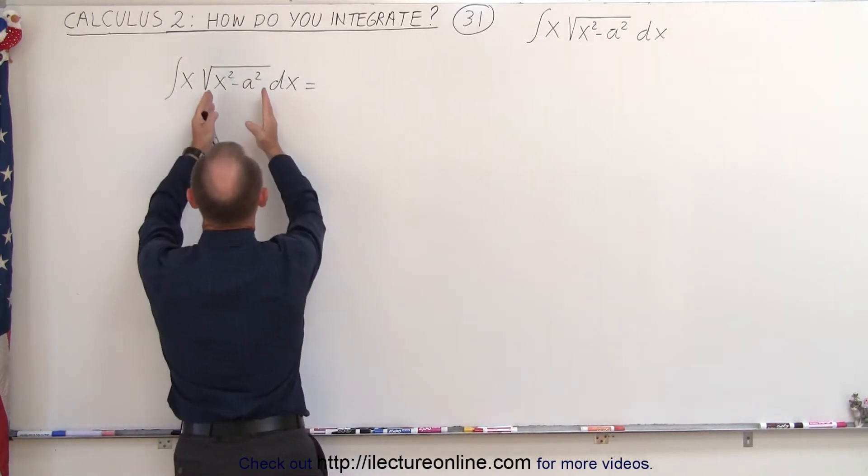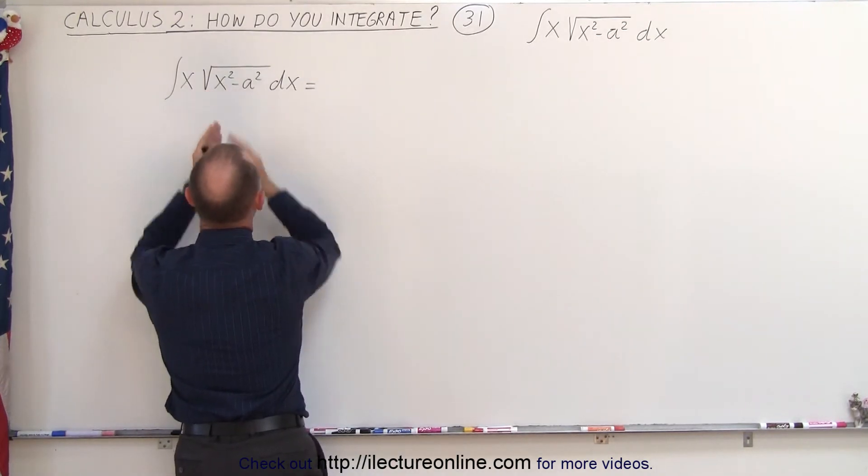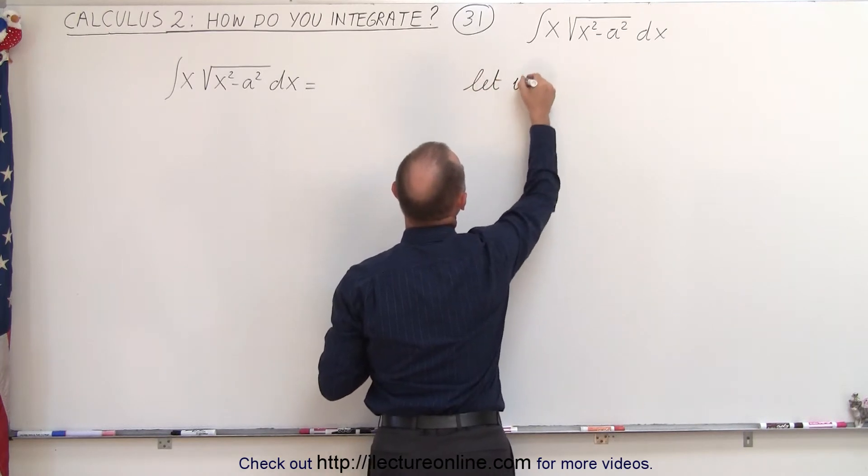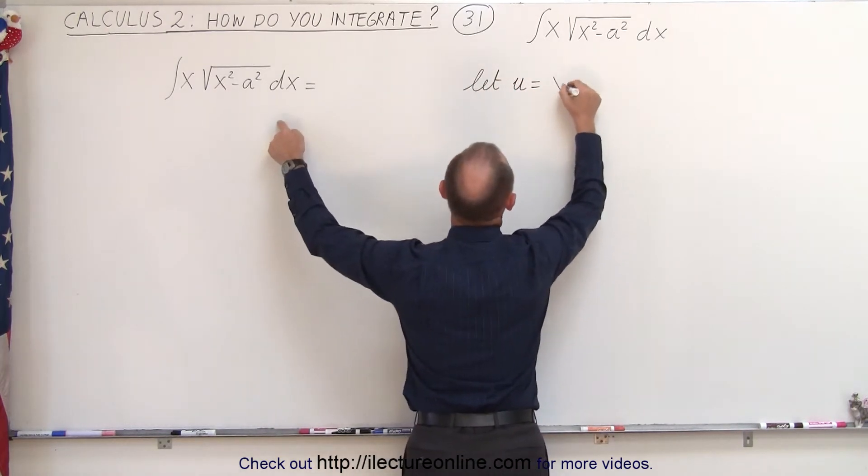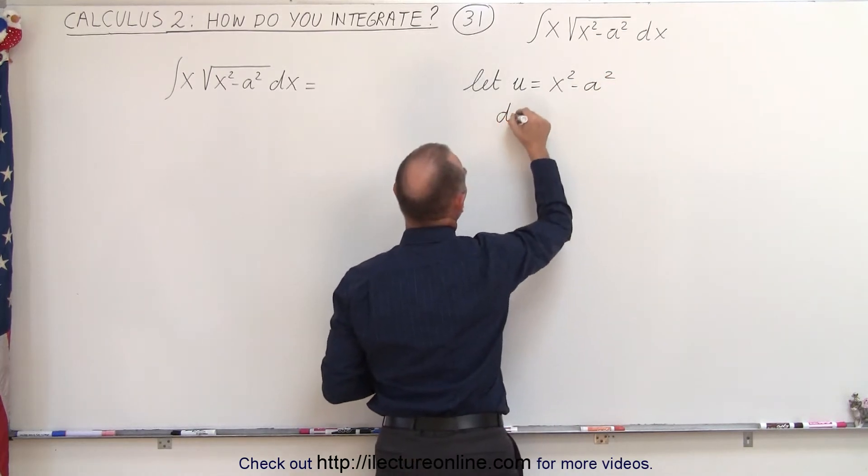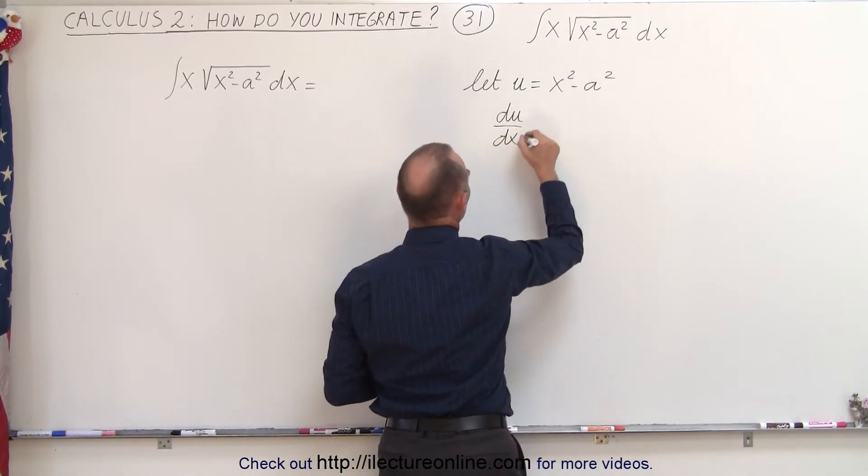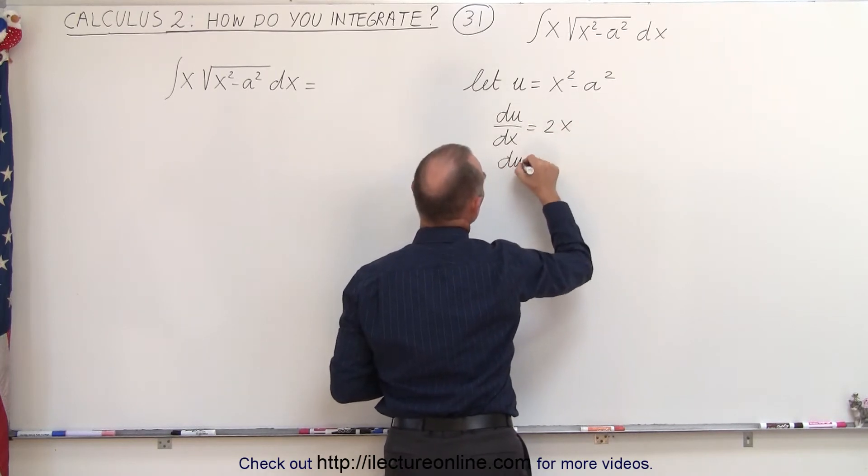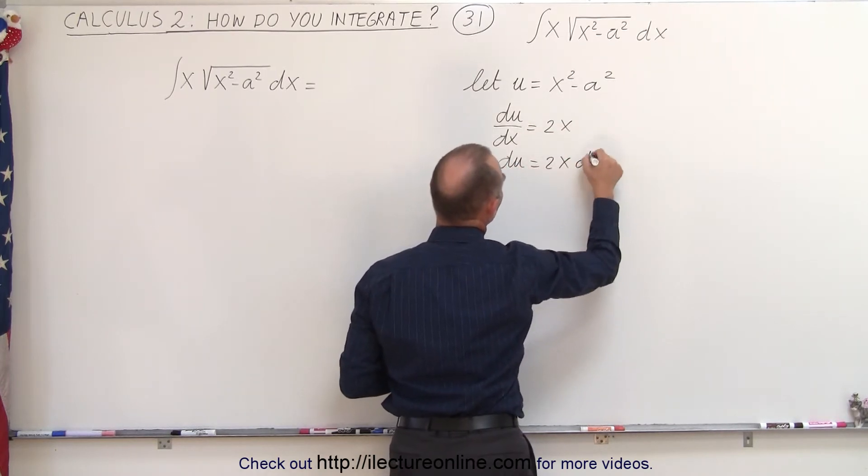We're going to let another variable called u equal what's inside the radical. So we're going to write, let u equal x squared minus a squared. And then we take the derivative of u, du dx, with respect to x, which is equal to 2x, which means that du equals 2x dx.